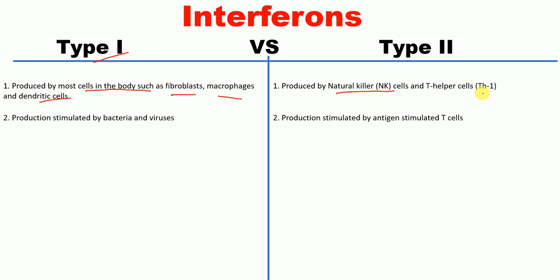Production of type 1 interferons is stimulated by bacteria and viruses, whereas the production of type 2 interferons is stimulated by antigen-stimulated T-cells.